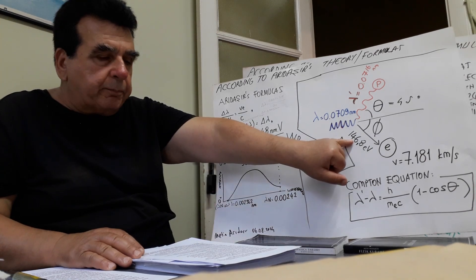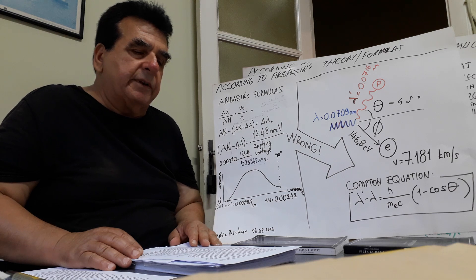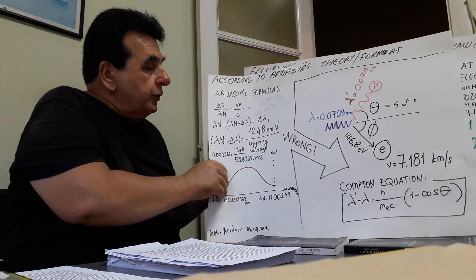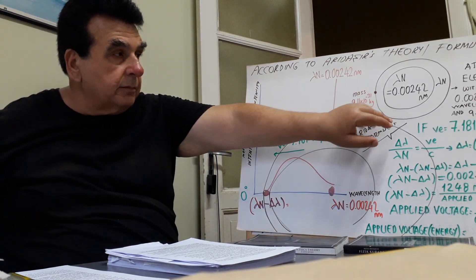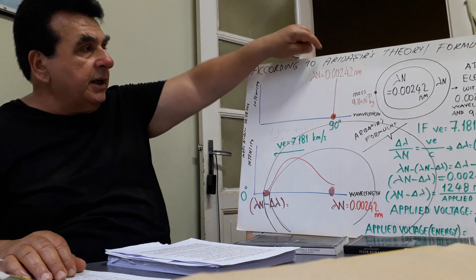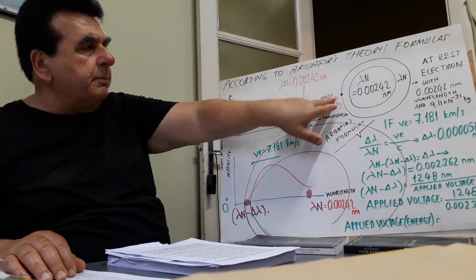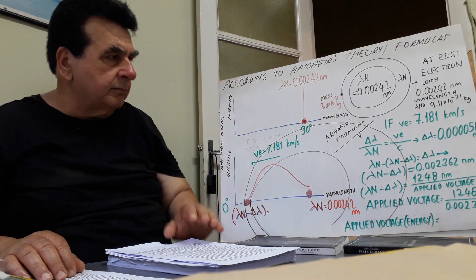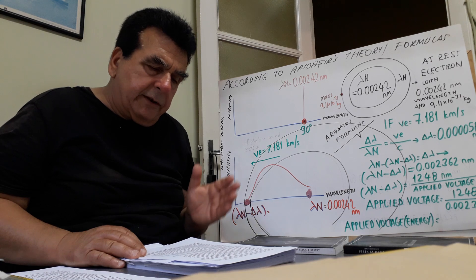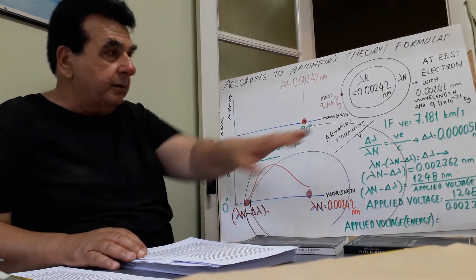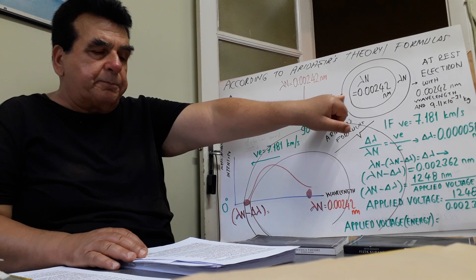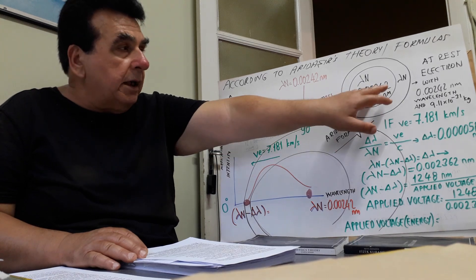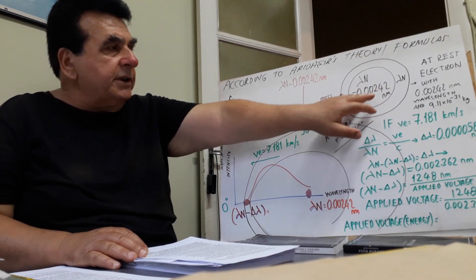Is it really possible for 146.8 electron volts of energy to give a 9.11×10⁻³¹ kilogram electron this speed? It is at rest, and its wavelength is 0.00242 nanometer, and its point mass is 9.11×10⁻³¹ kilogram. Is it really possible for 146.8 electron volt energy to give a 9.11×10⁻³¹ kilogram electron a speed of 7.189 kilometers per second? The initial wavelength of the rest electron mentioned here is lambda-normal — I call it lambda-normal — 0.00242 nanometer.